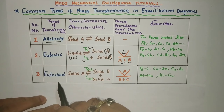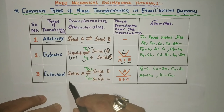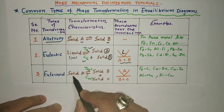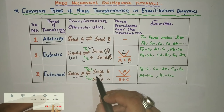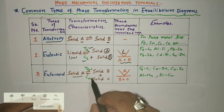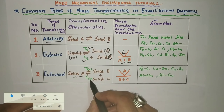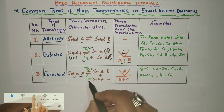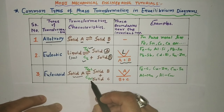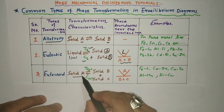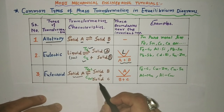After eutectic transformation, we discuss eutectoid transformation. In eutectoid transformation, one solid transforms into two more solids at a specific temperature and specific composition. That temperature is known as the eutectoid temperature, and the overall process is known as eutectoid transformation.